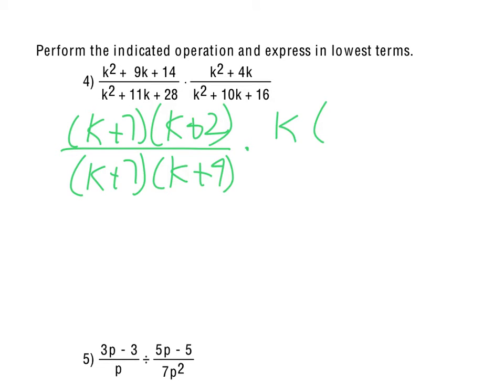The k squared plus 4k, we can take a k out of that, get k times k plus 4, and the k squared plus 10k plus 16 would be k plus 8, k plus 2.